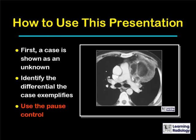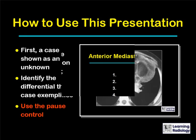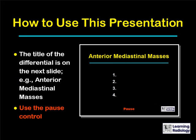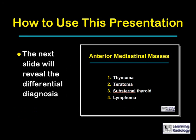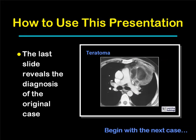How to use this presentation: First, a case is shown as an unknown. Identify the differential that the case exemplifies. Use the pause control on your computer or MP3 player. The title of the differential is on the next slide — in this case, it's anterior mediastinal masses. Again, use the pause control. The next slide will reveal the differential diagnosis, and the last slide reveals the diagnosis of the original case.